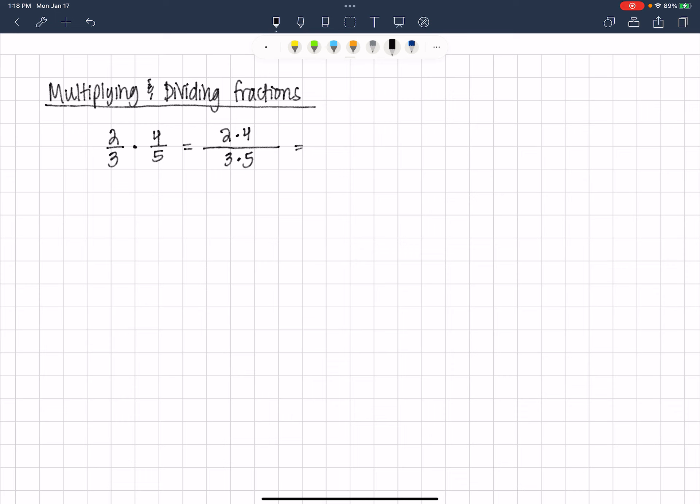And 2 times 4 is 8, 3 times 5 is 15. So the product of 2 thirds times 4 fifths is 8 fifteenths. So multiplying, you multiply straight across. So here's our multiplication rule.